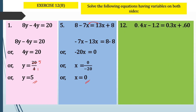Let's take another one, question number 12: 0.4x minus 1.2 equals 0.3x plus 0.6. Here we have variables on both sides. We'll bring the variable to the left-hand side and take the constant to the right-hand side. So 0.4x minus 0.3x equals 0.6 plus 1.2.